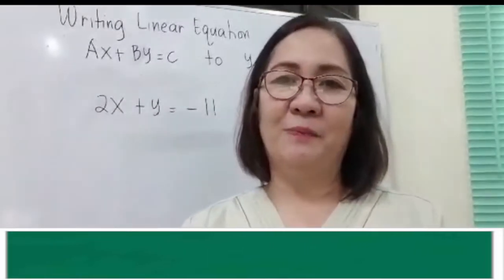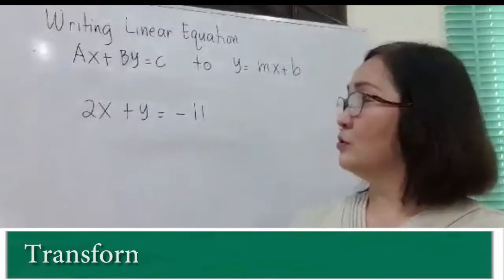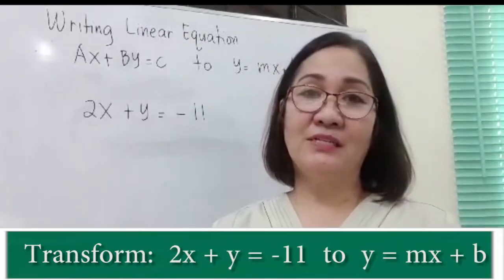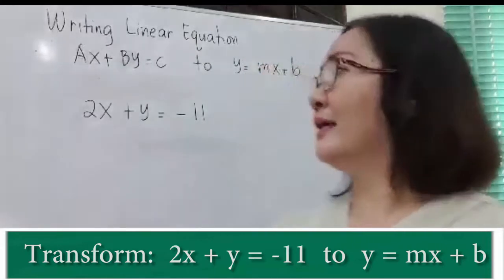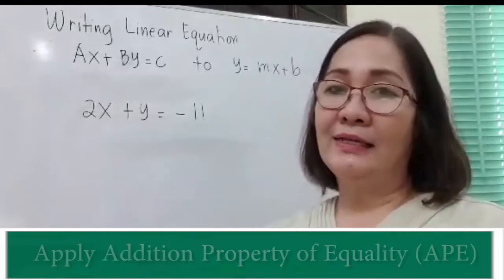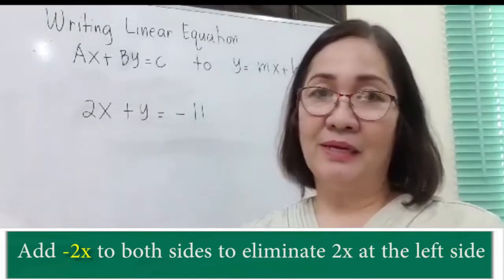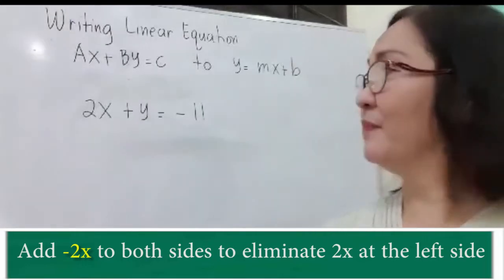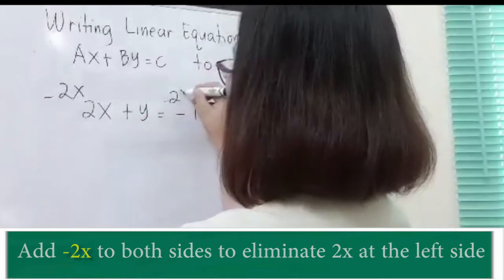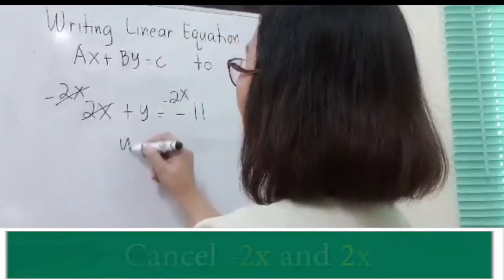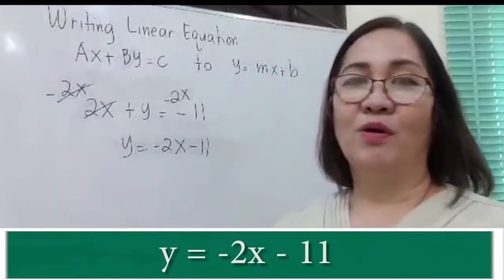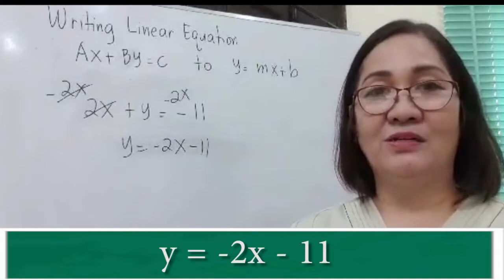Let's have another example. Transform 2x plus y is equal to negative 11 to the slope-intercept form y is equal to mx plus b. By addition property of equality, we will add negative 2x to both sides to eliminate 2x from the left side. So you have y is equal to negative 2x minus 11. That is in the slope-intercept form.